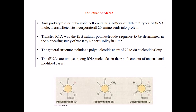Let us talk about the structures of tRNAs. The tRNAs are called the transfer RNAs. These tRNAs are actually the carriers for the amino acid sequences. They have an anticodon loop and also an attachment site. The tRNA has a characteristic L-shaped structure and possesses the most complex tertiary structure among all RNA structures.